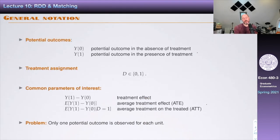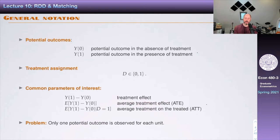The general notation we'll use involves potential outcomes Y1 and Y0, nothing different from before. Treatment assignment D is binary: D=1 being treated, D=0 not treated. The parameter of interest could be the treatment effect Y1 minus Y0, whose summaries include the average treatment effect, the average treatment effect on the treated, and others like the local average treatment effect. The fundamental identification problem is that for each unit, we only observe either Y1 if treated, or Y0 if not treated.